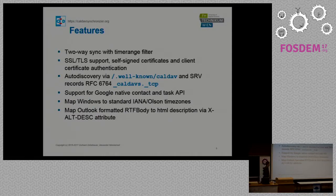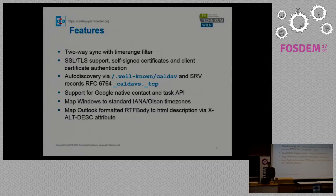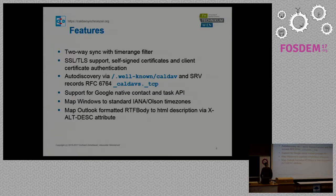Let's come to the features. The main feature is of course two-way synchronization. A nice feature is time range filtering, which can drastically reduce the amount of traffic and synchronization time, because it's rather useless to synchronize 3,000 events which lie five years in the past. This is possible for most CalDAV servers but many clients don't support it — for example, with Thunderbird Lightning you don't have the possibility to select the time range. So this is a nice feature which is also not possible with ActiveSync.